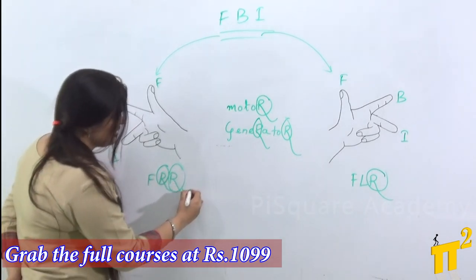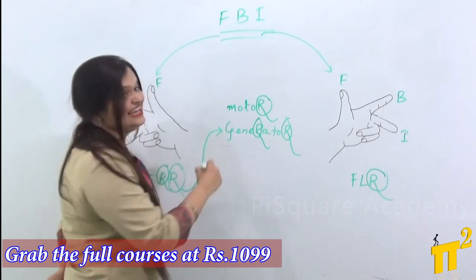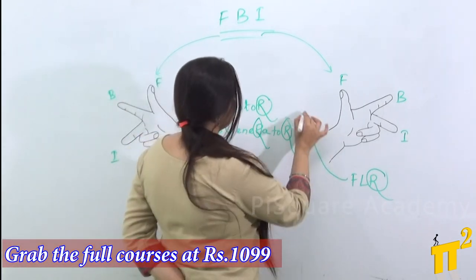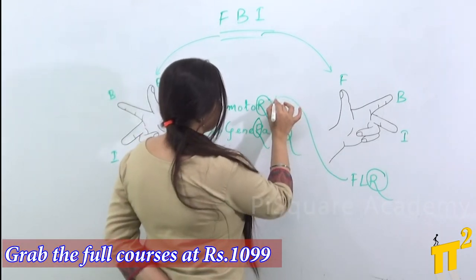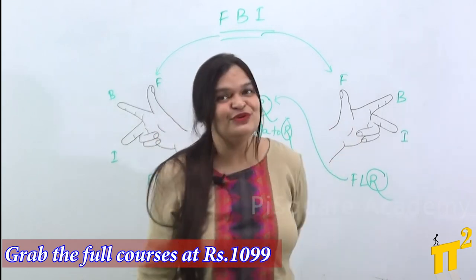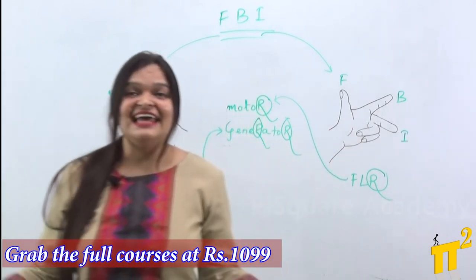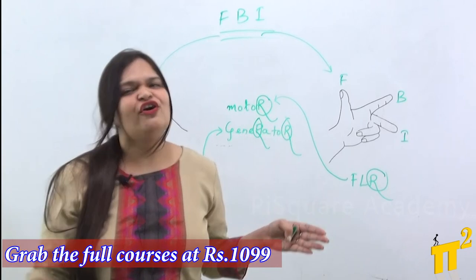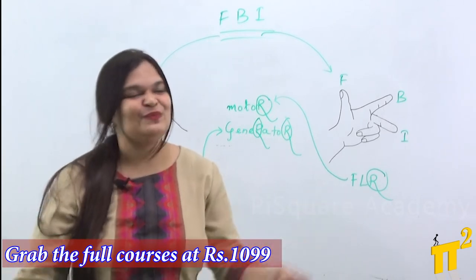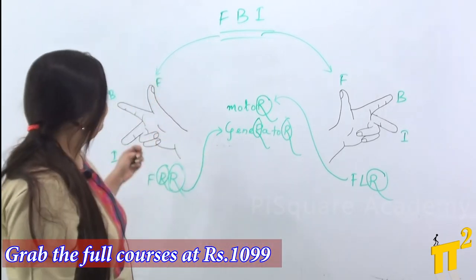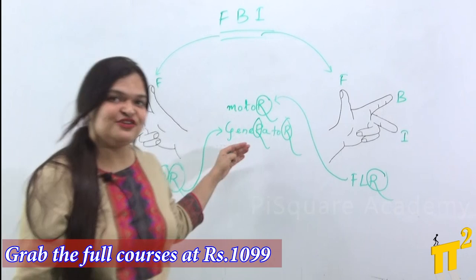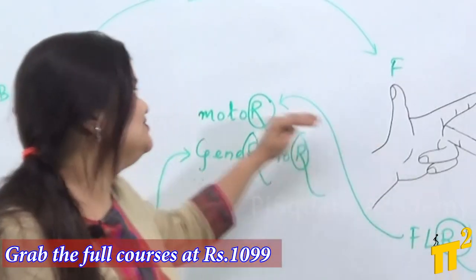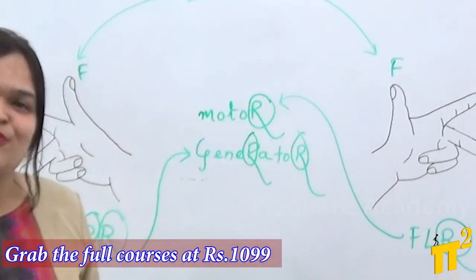So Fleming's Right Hand Rule is applied in the case of generators, and Fleming's Left Hand Rule is applied in the case of motors. The biggest mix-up in your mind is now solved. Fleming's Right Hand Rule is used for generators and Fleming's Left Hand Rule is used for motors.